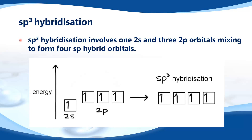Finally, SP3 hybridization involves one 2s and three 2p orbitals mixing to form 4 sp3 hybrid orbitals. Here is the excited state of carbon before sp3 hybridization.